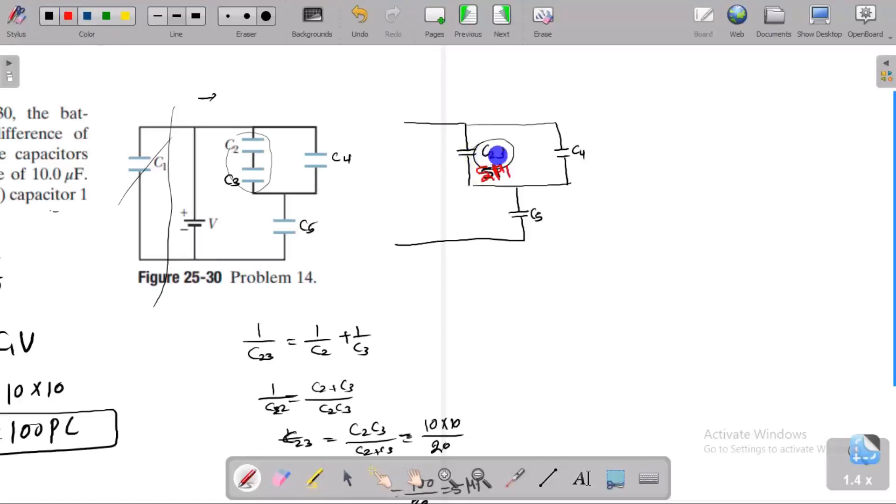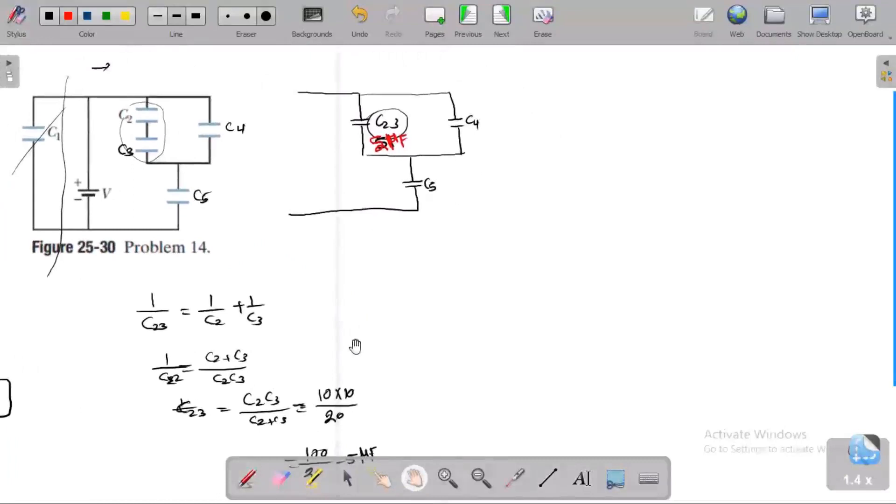C2,C3 equals 5 microfarads. Then convert this combination. C2,C4 are in parallel. The circuit looks like this. C2,C4 is a parallel combination, so C2,C4 equals C2,C3 plus C4. C2,C3 value is 5, C4 value is 10, so 15. This value is 15 microfarads. Then what happened to C2,C4 and C5? Both are in series combination.